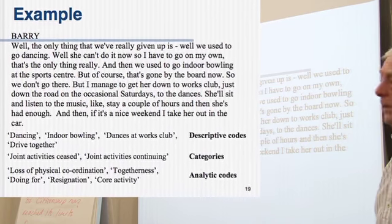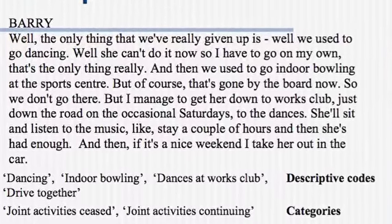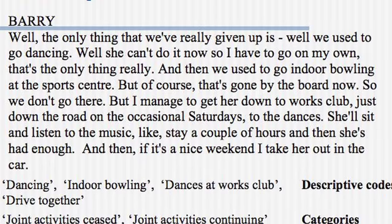And he talks here about the things they did together and the things they can't do together. So he's talking about going dancing, she can't do now, has to go on his own. And he used to go indoor bowling with her at the sports centre, of course, that's gone by the board now as well. She can hardly walk, she's very badly coordinated, you know, it's that bad. So I manage to get her down to the works club, so she can walk around with help, and she just sits down and she takes over the dancing, but she doesn't dance, she actually just sits and listens. She stays for a couple of hours, and she says no. As long as we came, I take her out in the car, so as long as she gets from the car, gets her out of the car.